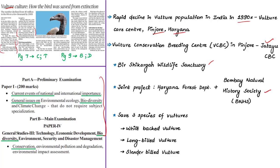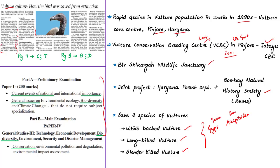The Vulture Conservation Breeding Center at Pinjor is known as Jatayu Conservation Breeding Center, located in Bir Shikargah Wildlife Sanctuary in Haryana. It is a joint project of the Haryana Forest Department and the Bombay Natural History Society, a collaborative initiative to save three species of vultures — the white-backed vulture, the long-billed vulture, and the slender-billed vulture — from extinction. The center was established in 2001, initially called a Vulture Care Center, then upgraded as a Vulture Conservation Breeding Center in 2004.